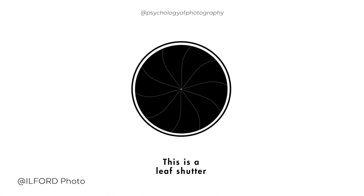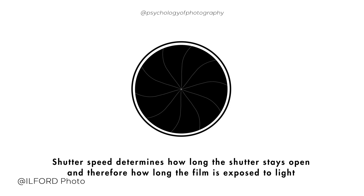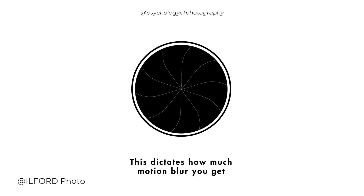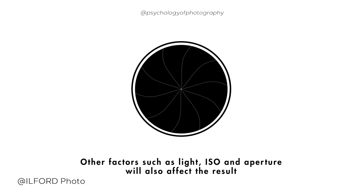Shutter speed refers to the amount of time the camera shutter is open when taking a photograph. The longer the shutter is open, the more light enters the camera and the brighter the image will be. The shorter the shutter is open, the less light enters the camera and the darker the image will be.